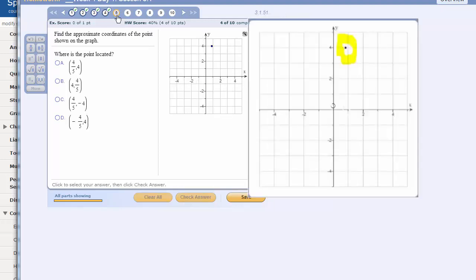All right, let's do a couple more. Eww, terrible. We have fractions. Let's see, find the approximate coordinates of the point shown on the graph.